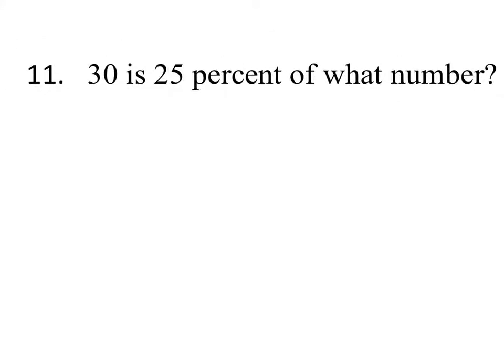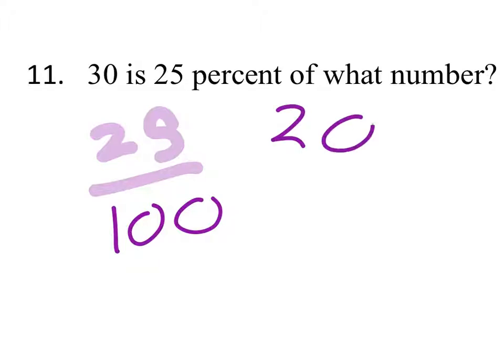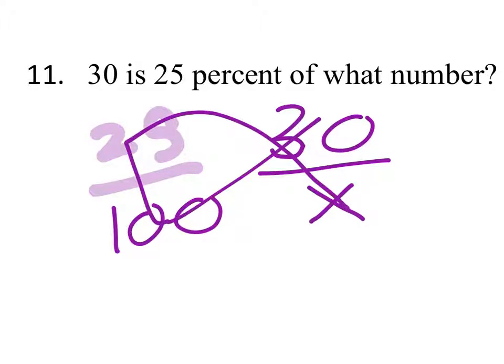You do 25 over 100, and then you go 30 over X. Then you do 30 times 100 divided by 25 equals 120.